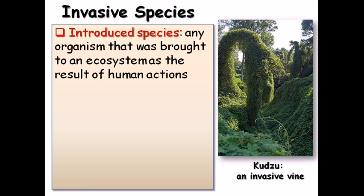The introduced species are any organism that was brought to an ecosystem as a result of human action. For example, here you can see that inside Kurzu, which is an island, an invasive vine is shown in this picture. The introduced species means if inside a particular ecosystem we have encountered, after utilizing several techniques, that a particular species is getting hampered or something like that, so we need to bring that species back into the ecosystem.